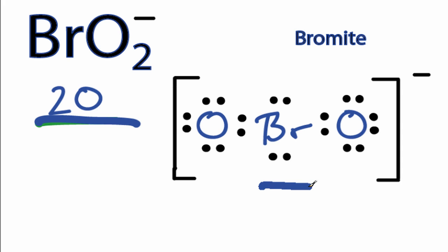However, bromine is in period 4 of the periodic table, and it can hold more than 8 valence electrons, so we really need to check the formal charges.